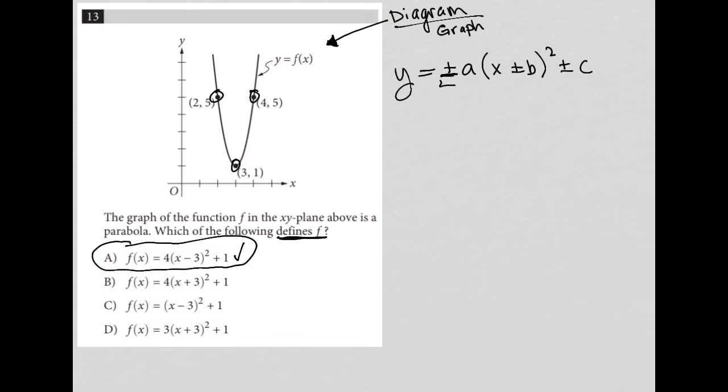So in a parabola, this plus or minus here tells me the direction of the parabola. So if it's a positive, the parabola faces up. If it's negative, the parabola faces down. This A value here basically gives me the width of the parabola. So if this is, if A is greater than 1, it's going to be a narrow. And if A is less than 1, it's going to be a wide parabola.